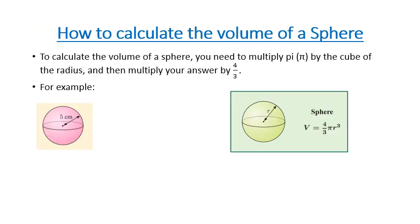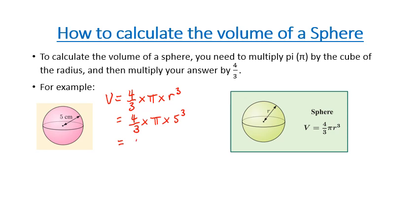The last object is a sphere. To calculate the volume of a sphere, multiply pi by the cube of the radius, then multiply by 4 thirds. For the pink sphere example, that's 4 thirds multiplied by pi multiplied by 5 cubed, which gives us an answer of approximately 523.6 centimetres cubed.